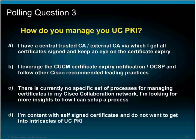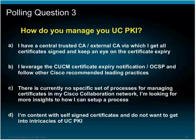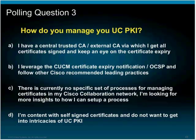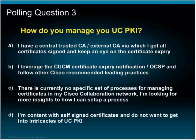The third polling question is: how do you manage the UC PKI? There are four options. The poll is open on the right-hand side. Option A: I have a central trusted CA, external CA, via which I get all certificates signed and keep an eye on certificate expiry. Option B: I leverage the CUCM certificate expiry notification, OCSP, and follow other Cisco recommended leading practices. Option C: there is currently no specific setup process for managing certificates in my Cisco collaboration network, and I'm looking for more insights. Option D: I'm content with self-signed certificates and do not want to get into the intricacies of UC PKI.